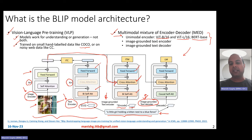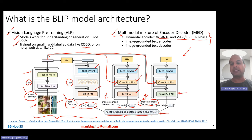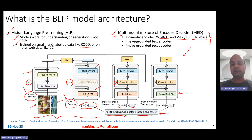The image-grounded text decoder takes images as input, and there is a cross-attention sublayer here as well, but it also has a causal self-attention mask — so in that sense it is a transformer decoder. The image-grounded text encoder and the image-grounded text decoder do not talk to each other. The key difference is that the encoder uses a bidirectional self-attention layer, while the decoder uses a causal self-attention layer.